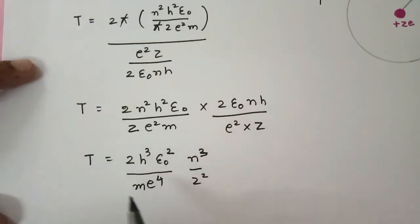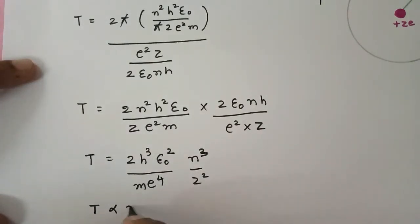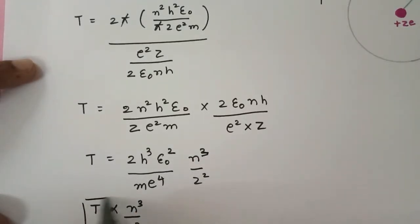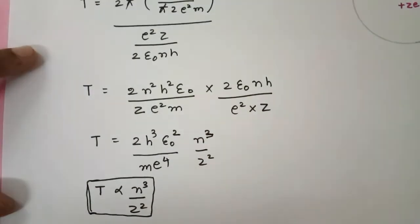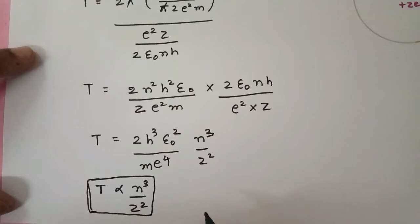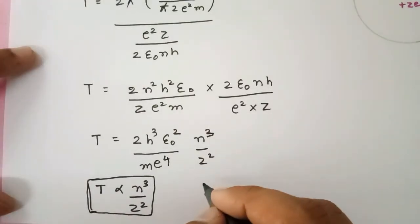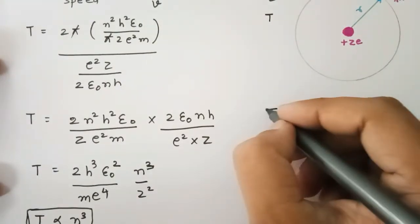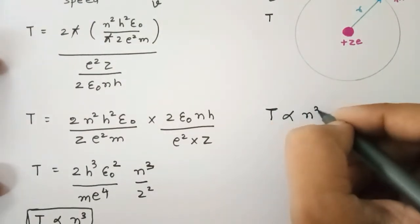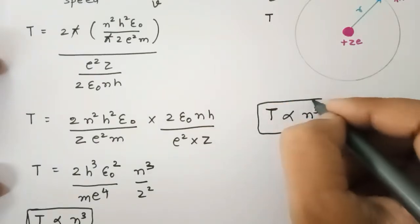So finally we can see that everything else is constant. So time period is basically proportional to N³ upon Z² — a very important expression. Now if we talk about a single atom, Z is also constant over there. So the time period expression would be directly proportional to N³ — a very important relation.